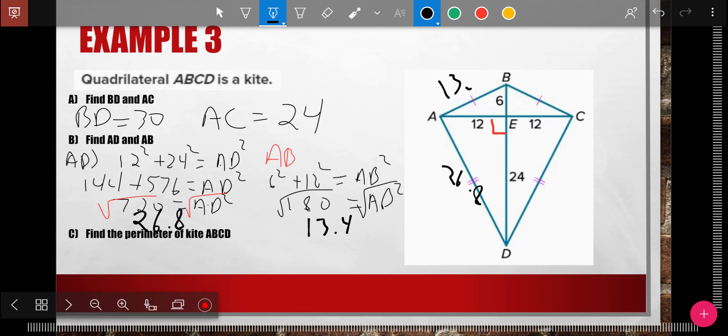So this is 13.4. Down here, let's just find the perimeter. Well, I know I have 26.8 or AD, which means CD is 26.8. And AB is 13.4, which means BC is 13.4. And so my perimeter is 80.4 units. Could be inches, could be centimeters.